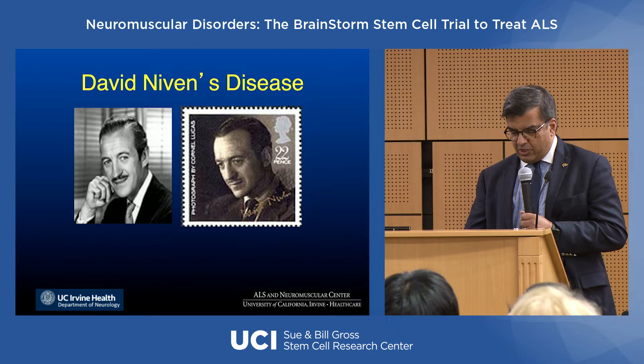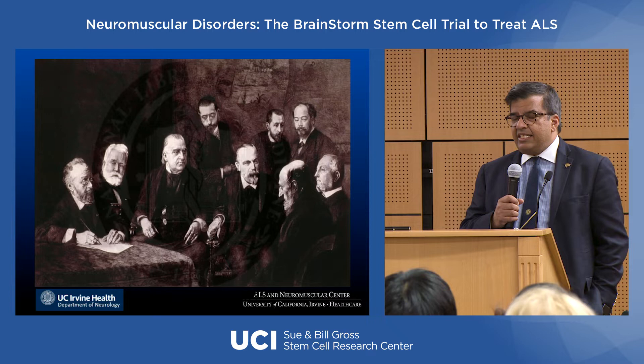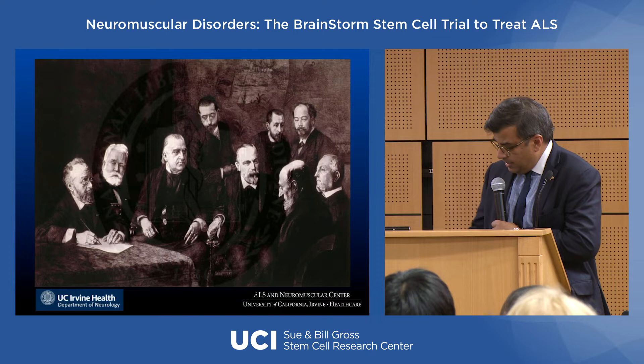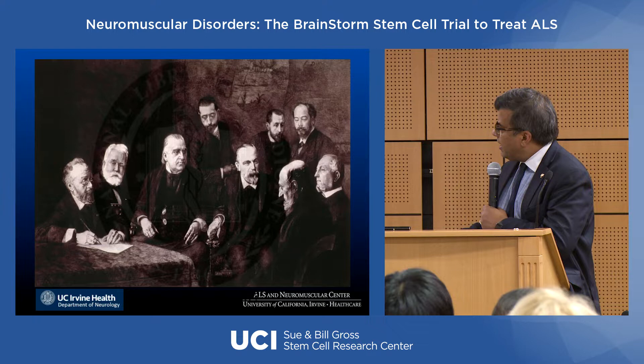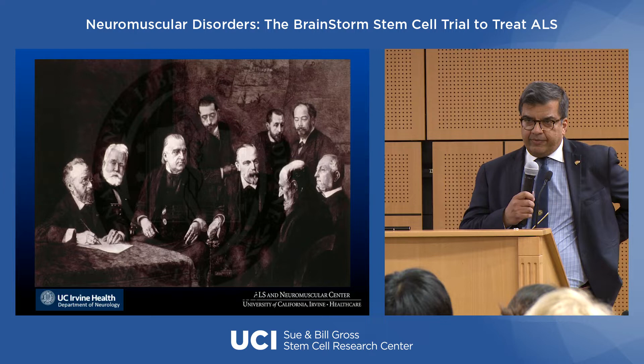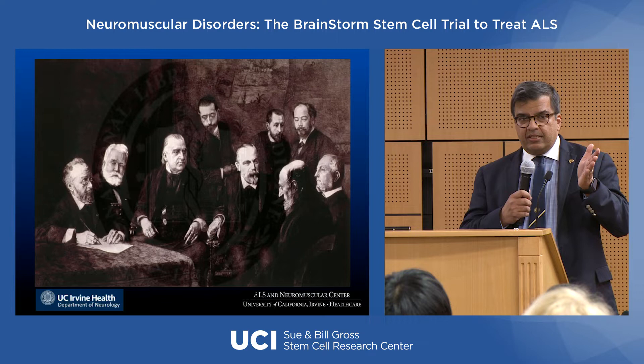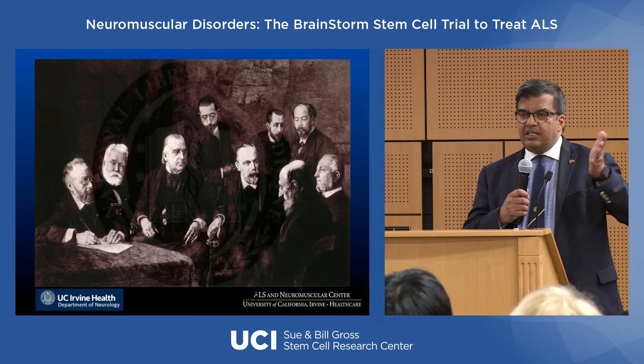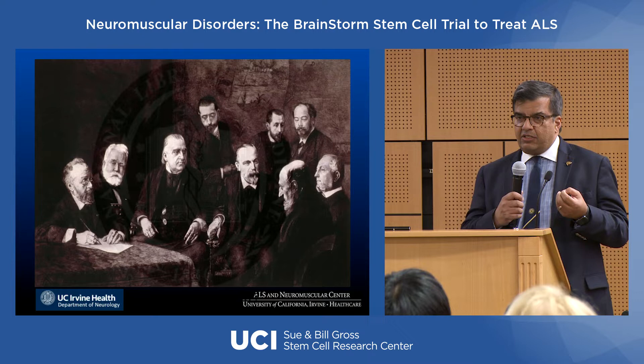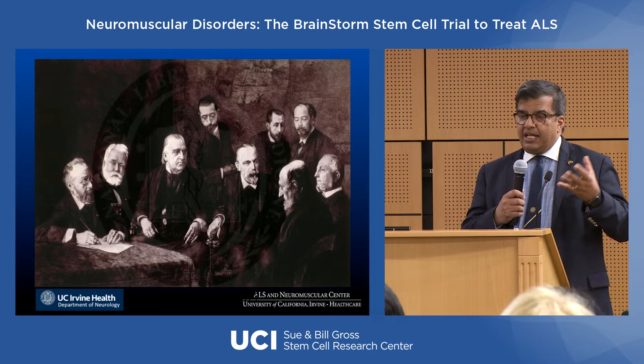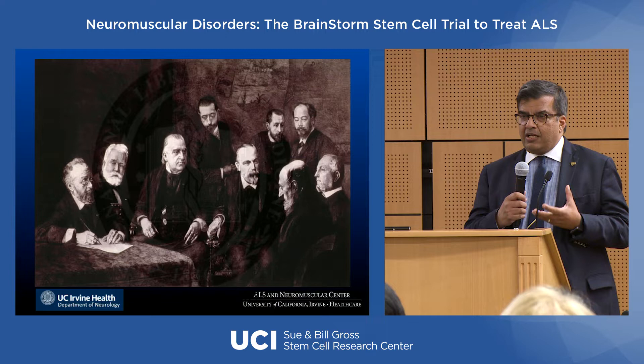The Motor Neuron Disease Association in the UK is housed in David Niven's original residence, which was donated to the association. But the disease was really discovered in the 1870s by Professor Charcot, the first professor of neurology in the world. He was a brilliant clinician and anatomist who invented the discipline of correlating pathology with clinical findings. He coined the term amyotrophic lateral sclerosis, suggesting that muscle wasting was related to damage to the lateral column of the spinal cord.